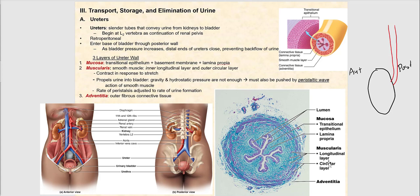The final layer of the ureter is the adventicia, made up of dense fibrous collagenous connective tissue.